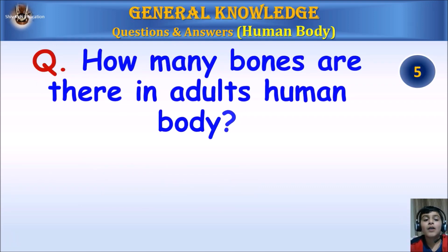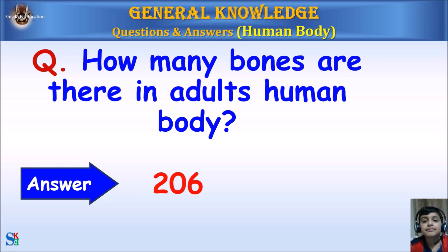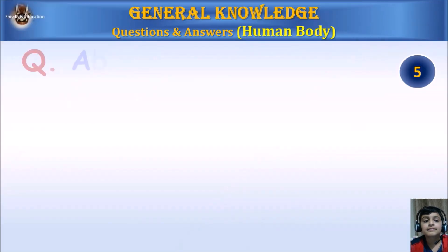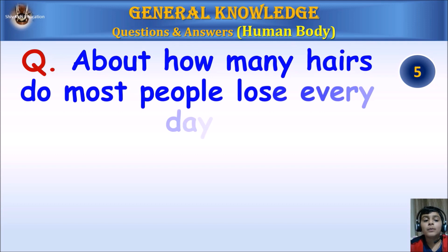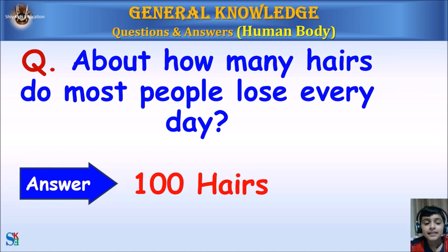How many bones are there in an adult human body? Answer: 206. About how many hairs do most people lose every day? Answer: 100 hairs.